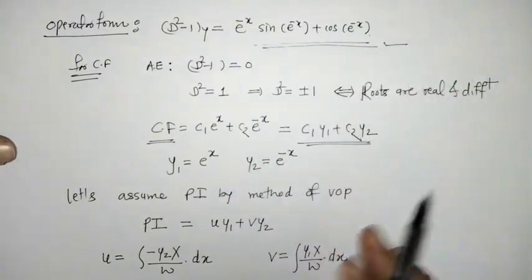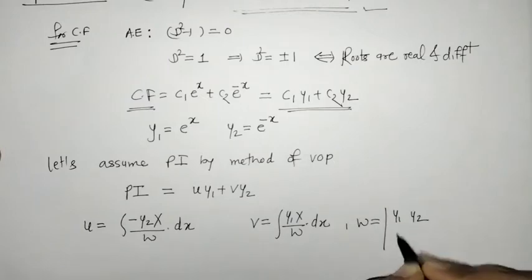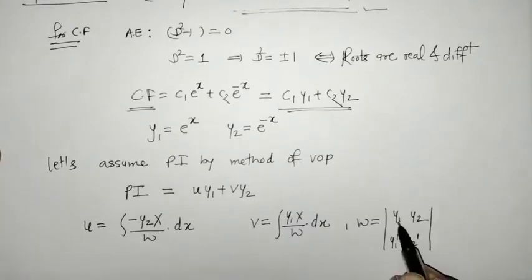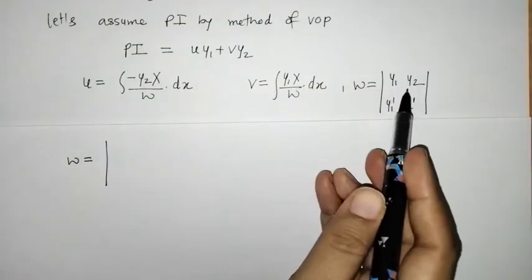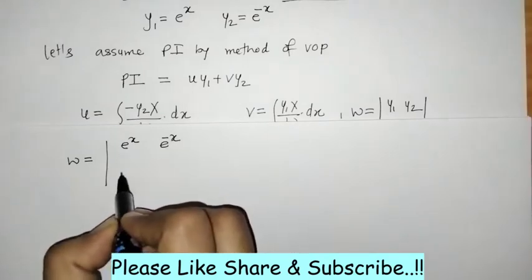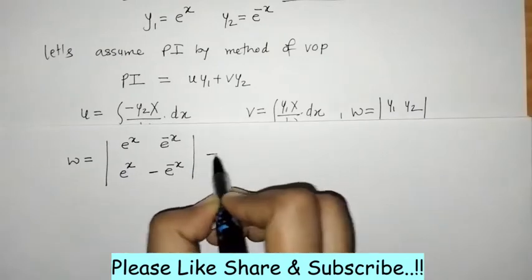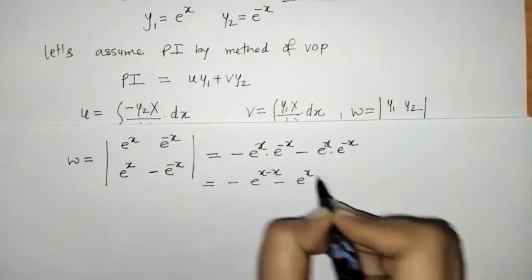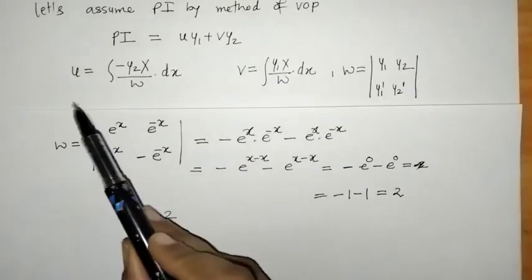Here X is the given function, and W is the Wronskian — the determinant with y1, y2 in the first row and their derivatives in the second row. The derivative of e^x is e^x and the derivative of e^(-x) is -e^(-x). Solving this 2×2 determinant gives W = -2.